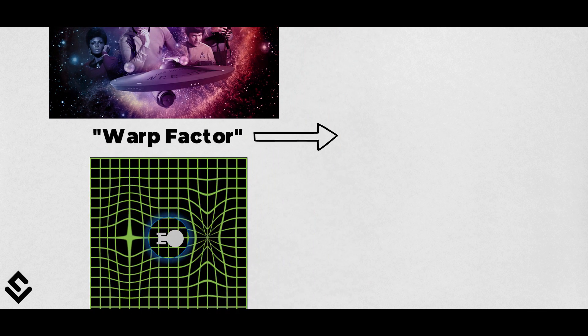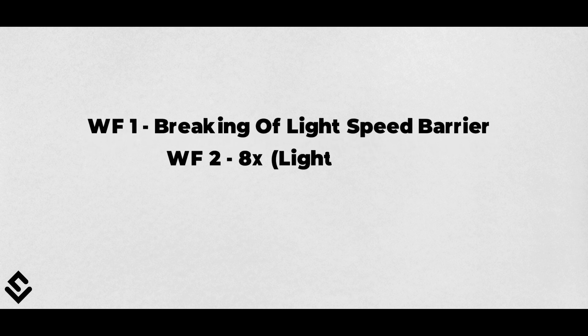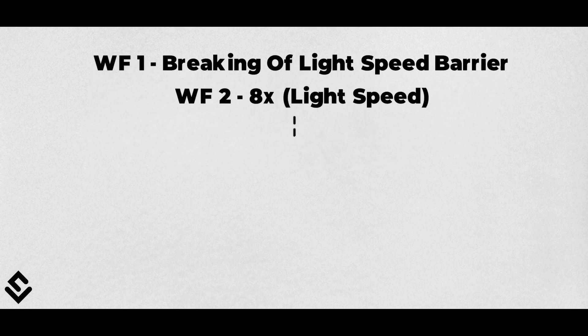The value of Warp Factor denotes the speed which has been achieved. For example, Warp Factor 1 denotes the breaking of the light speed barrier. Warp Factor 2 is equal to 8 times the speed of light, and so on.